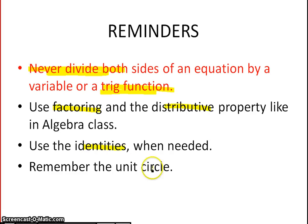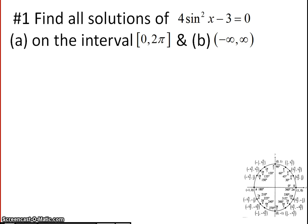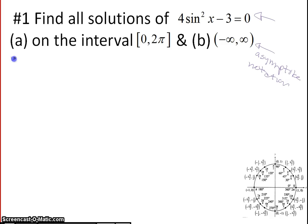We're going to use the identities and the unit circle. Here I have the unit circle, which will aid us. We are going to solve this equation for Part A on this interval, and then for Part B, we're going to find all solutions. To find all solutions, it's going to use the asymptote-like notation. So we're going to start off with our trig function: 4 sine squared x minus 3 equals 0.